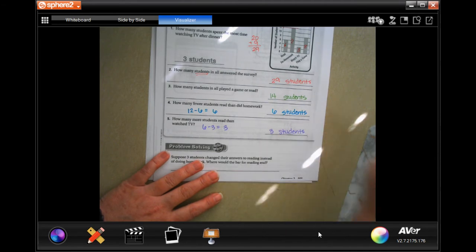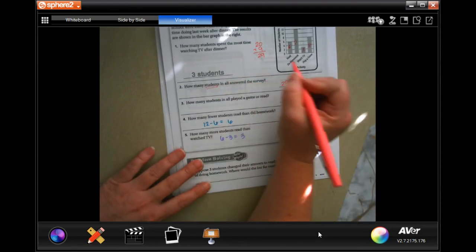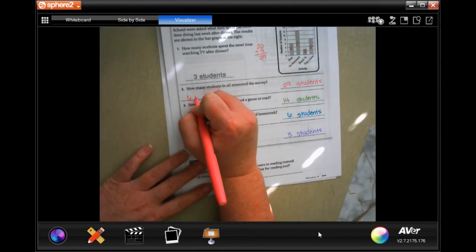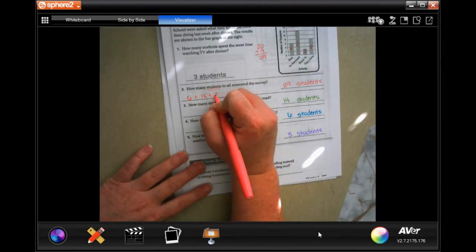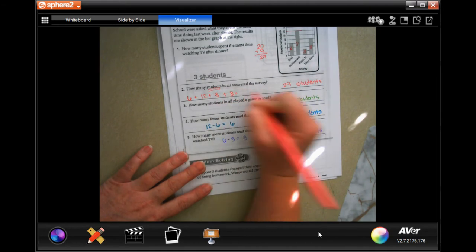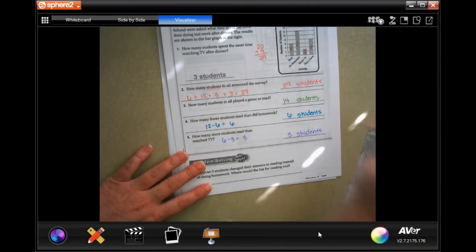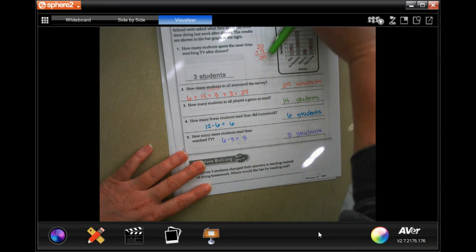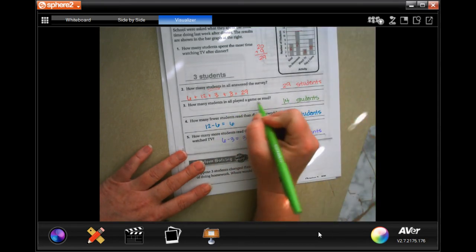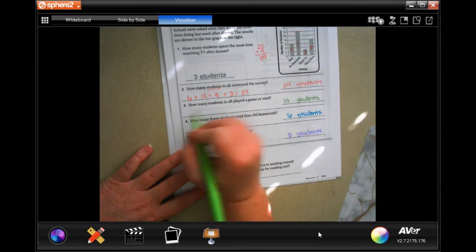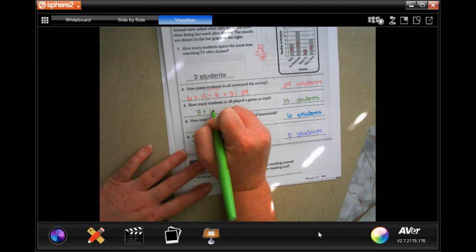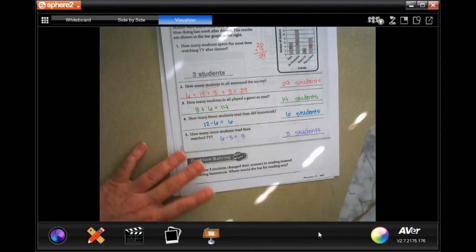I'm going to go ahead back up here really fast and I'm going to put six plus 12 plus three plus eight equals 29. And on this one, just to show our work, play the game or read. Read was six, play the game was eight. Eight plus six is 14, and that's just showing your work. That's how you got your answer.